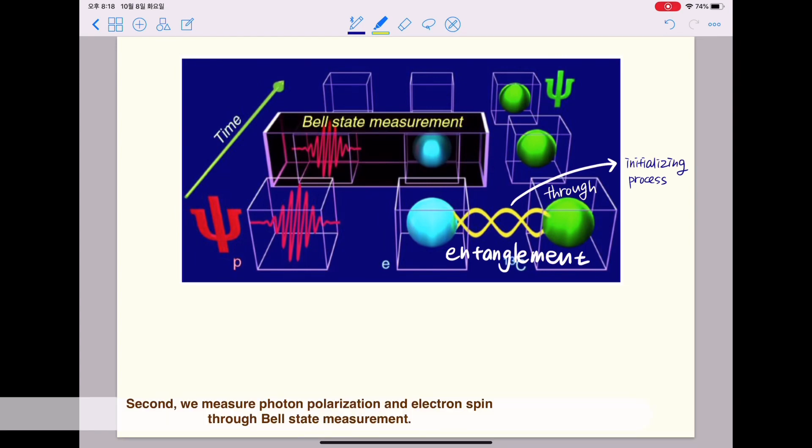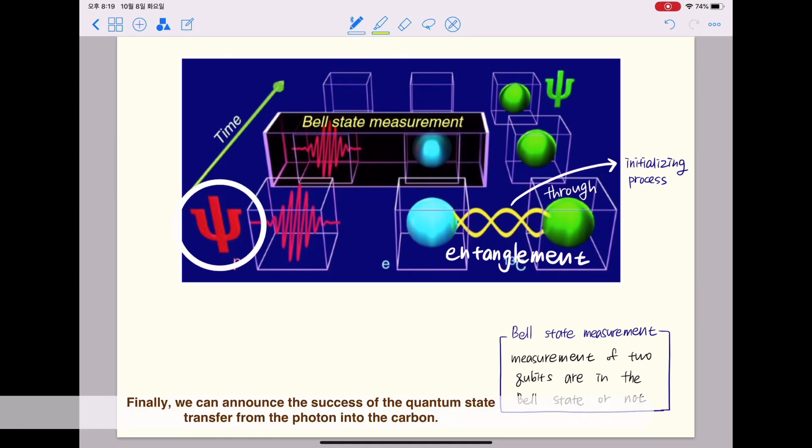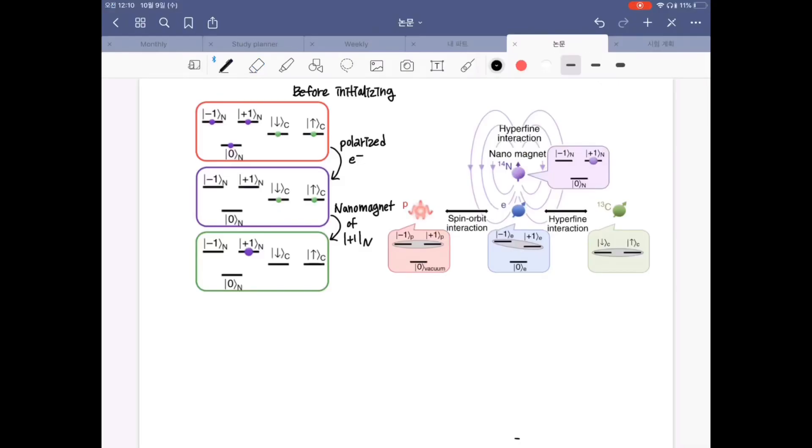Second, we measure photon polarization and electron spin through a bell state measurement. Finally, we can announce the success of the quantum state transfer from the photon into the carbon. Let's carefully look at each step in details.